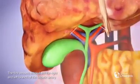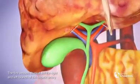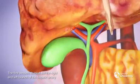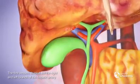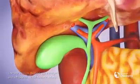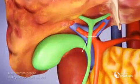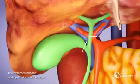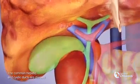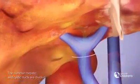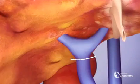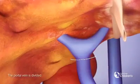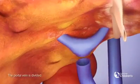We first divide the right and left branch of the hepatic artery. The common hepatic and cystic ducts are divided. The portal vein is divided.